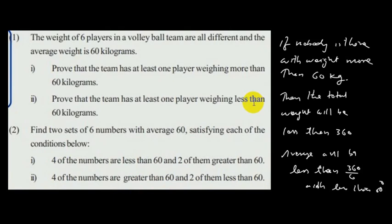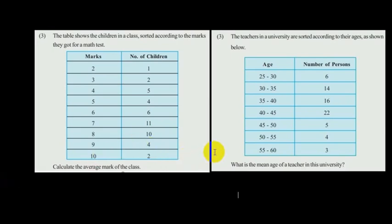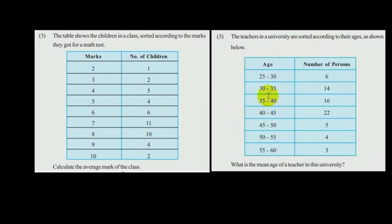Two more homework problems are assigned. The first: a table shows children in a class according to marks in a math test — calculate the average mark of the class. The second: teachers in a university are sorted according to their ages — find the mean using class intervals, as discussed in this chapter. Two additional questions from the textbook are also to be completed as homework. Thank you all.